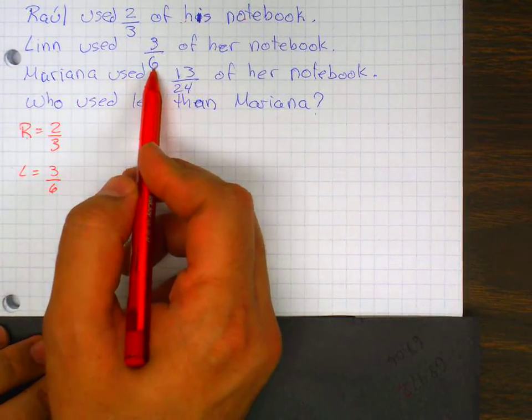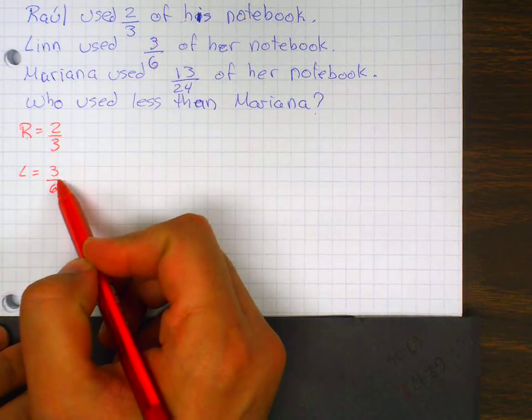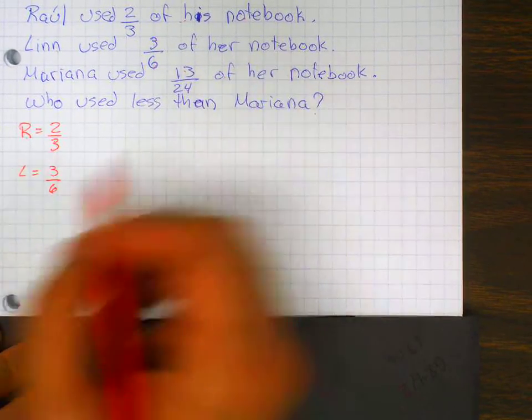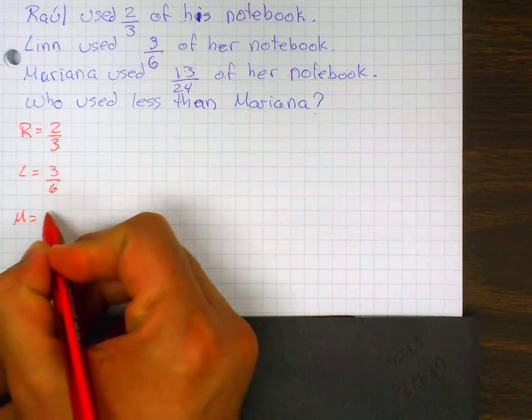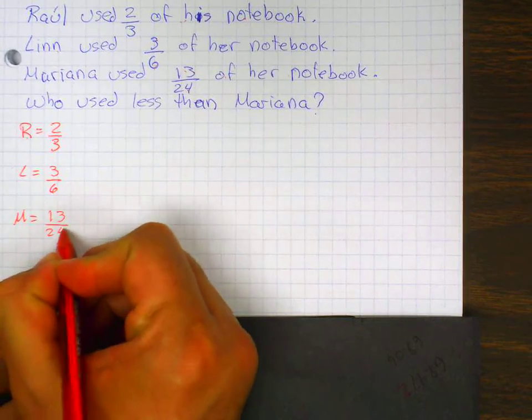Len used three-sixths of her notebook. Here is Len. And Mariana used thirteen twenty-fourths of her notebook.